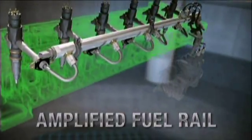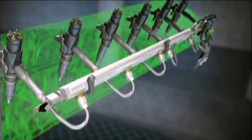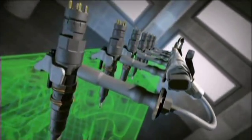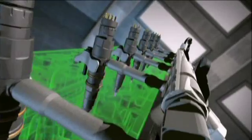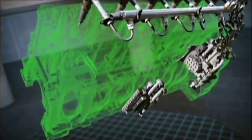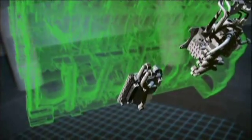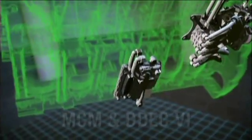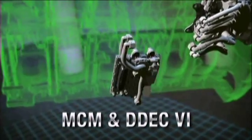The DD15 also features a next-generation amplified fuel rail system that increases normal fuel pressure using a high-pressure direct fuel injection strategy. The amplification pressures are contained within the injector, which reduces stress on the entire system. Fine-tuned injection pressure and timing for the combustion event is electromechanically controlled by the Motor Control Module and D-Deck 6.